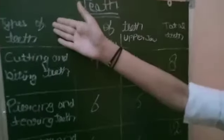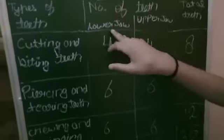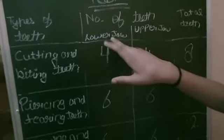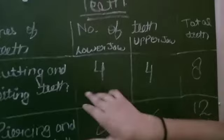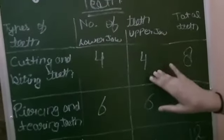Types of teeth: Cutting and biting teeth. Number of teeth at lower jaw. Lower means down and upper means up. At down there are 4 types and up there are 4 types, same.